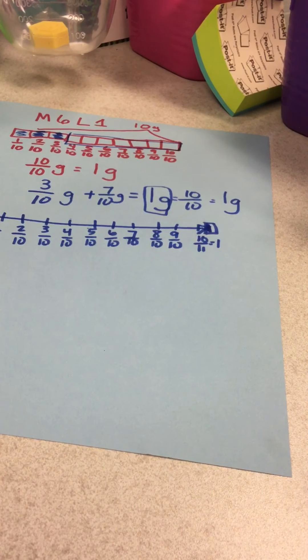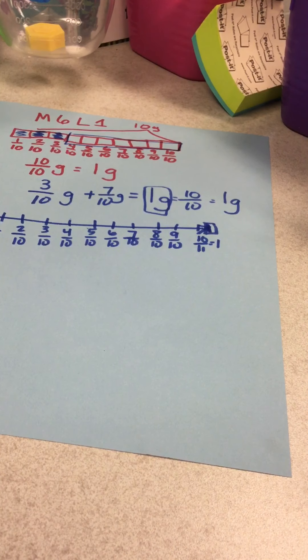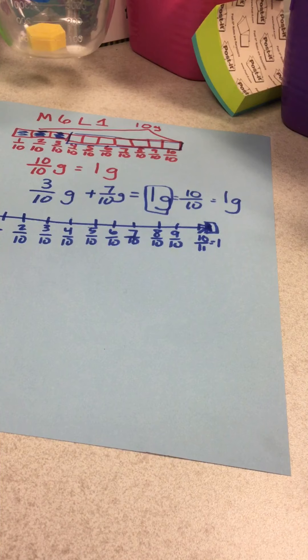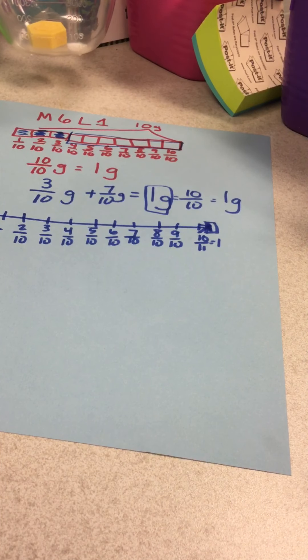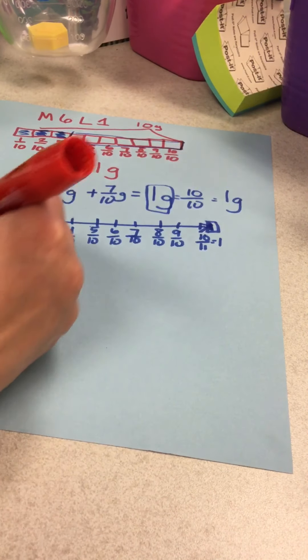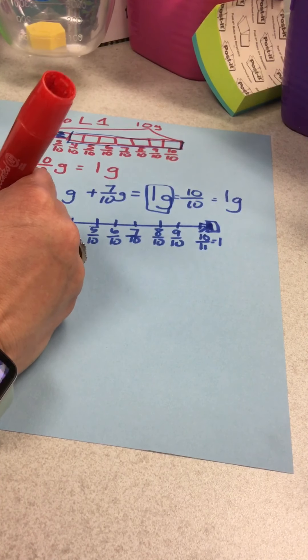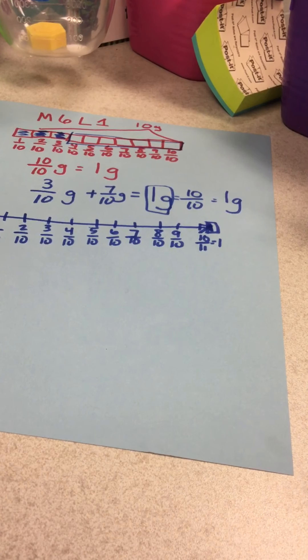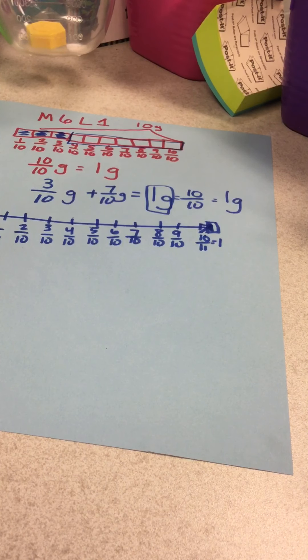So my next question is, we understand the tenths, but how do I know what is the decimal for one tenth? Well, I'm going to show you and this is pretty easy. All you're going to do is you're going to put a zero dot one, because if I take one divided by ten, you get point one.